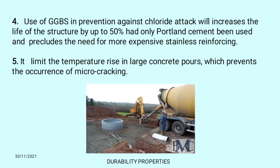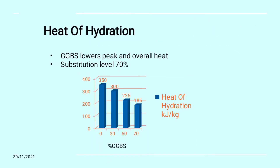It limits the temperature rise in large concrete pours, which prevents the occurrence of micro-cracking. Heat of Hydration: GGBS lowers peak and overall heat. Its substitution level reaches to 70%, which is quite high — meaning it can replace up to 70% of Portland cement.